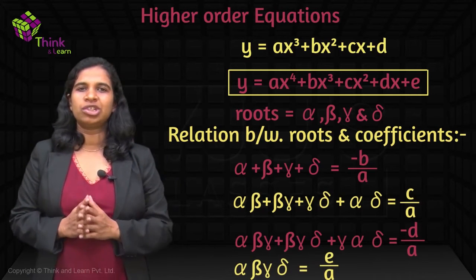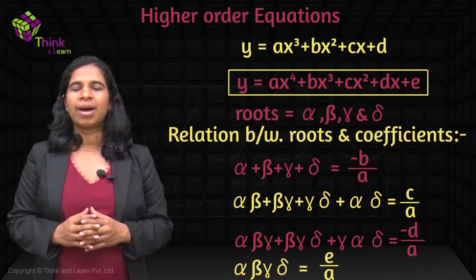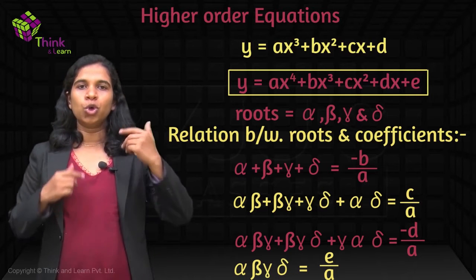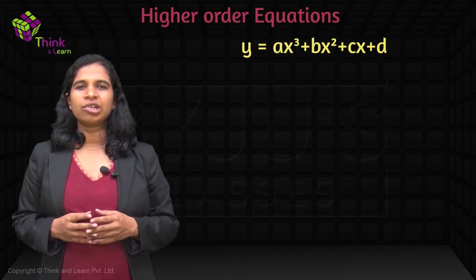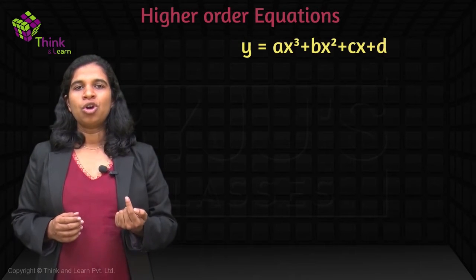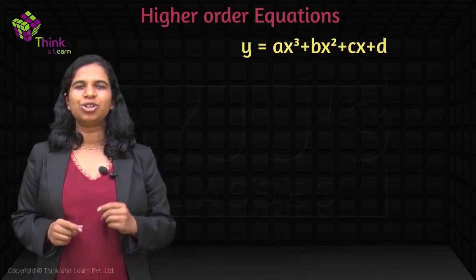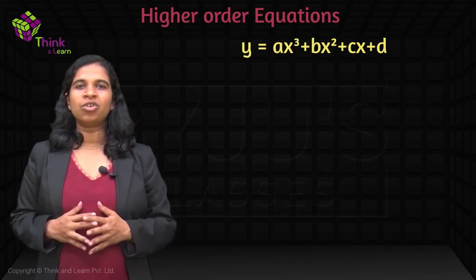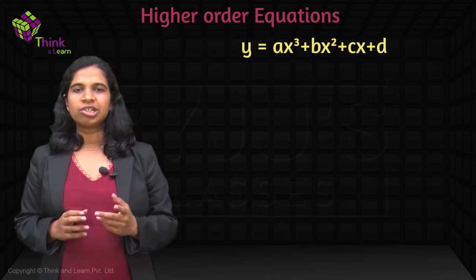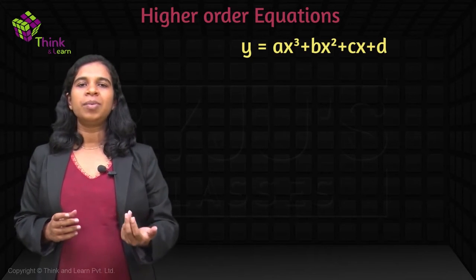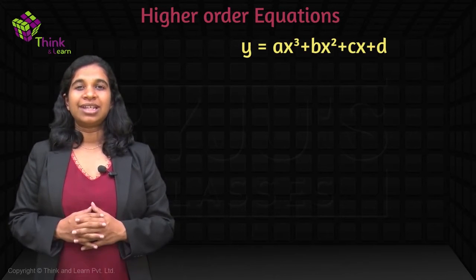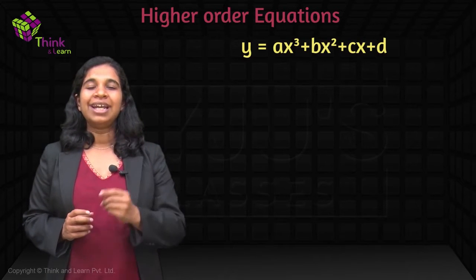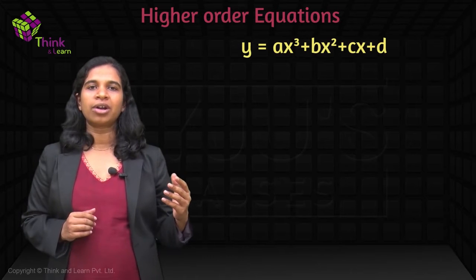Now when you're solving questions based on either a cubic or a biquadratic, the way you'll solve it is you'll reduce it to a quadratic equation. You are not expected to solve a cubic or biquadratic directly. So in a cubic equation, typically either one root will be given to you, or you'll need to find one root by trial and error — usually 0, 1, or minus 1. The moment you know one root, it is very easy to convert the cubic equation to a quadratic equation.